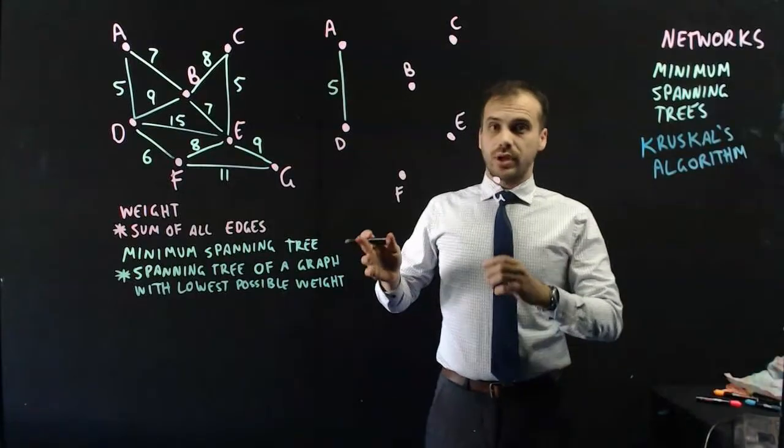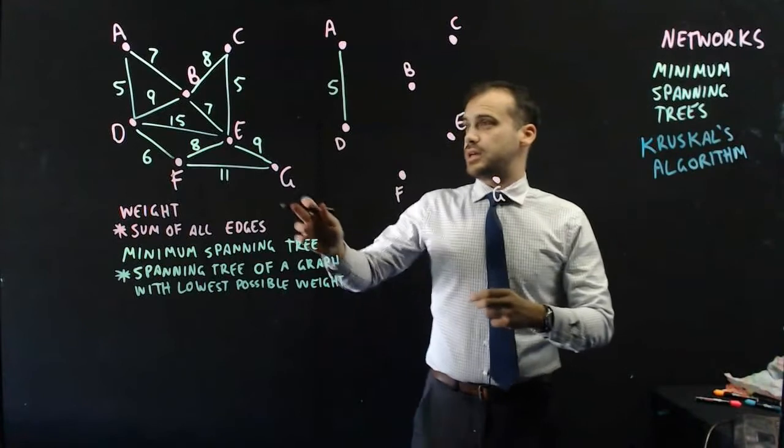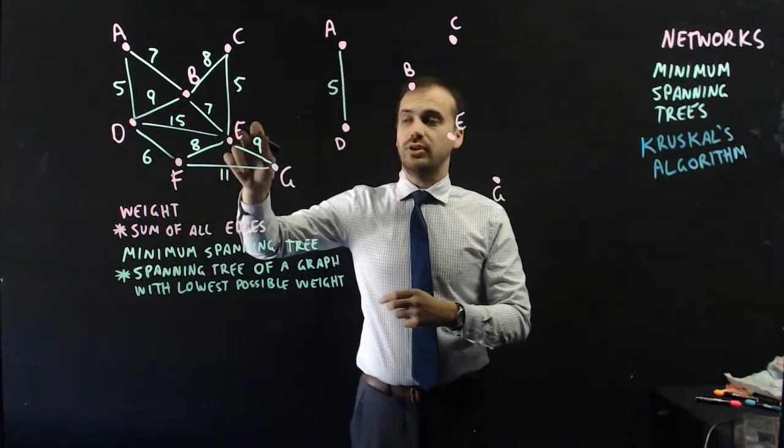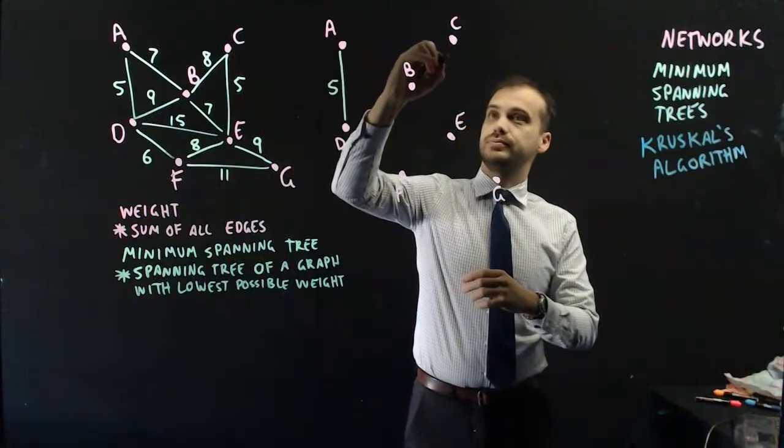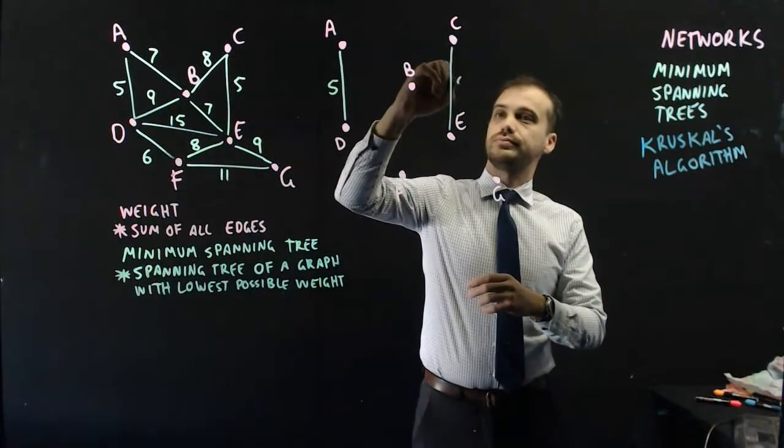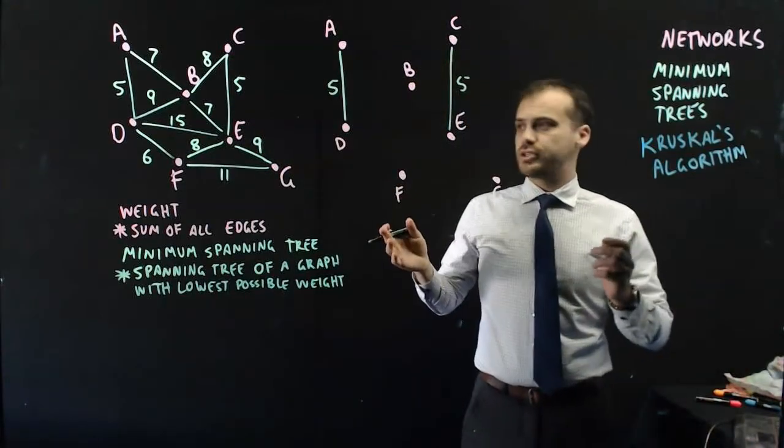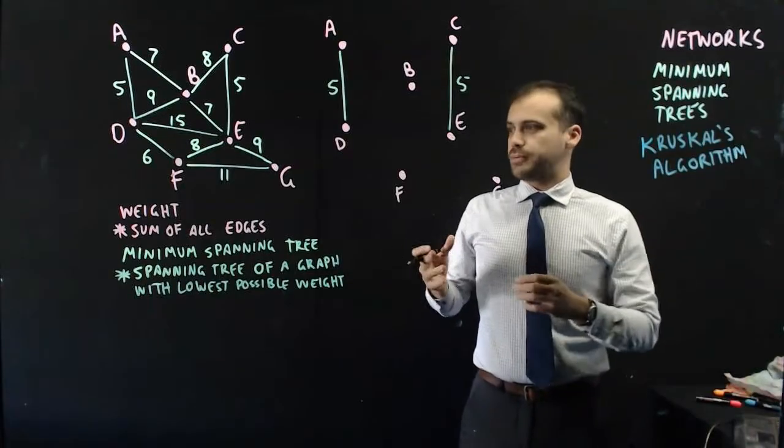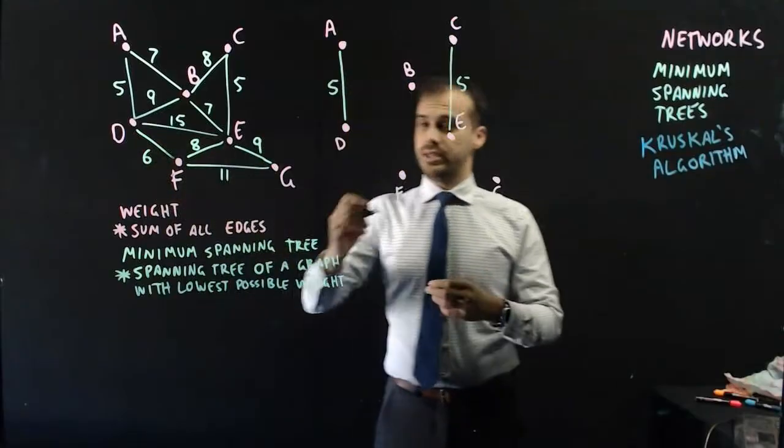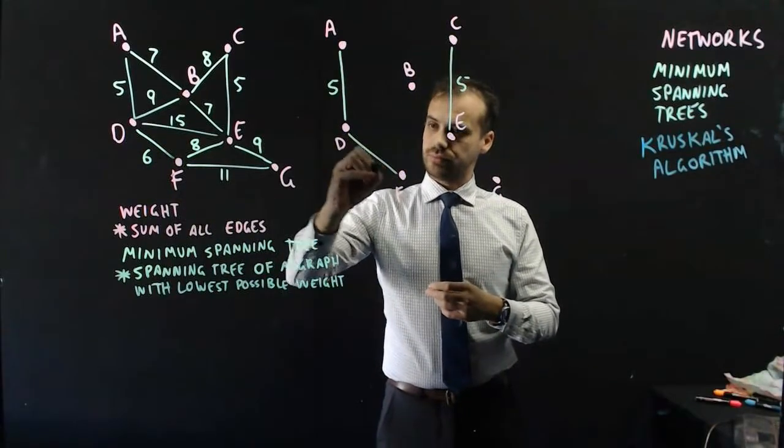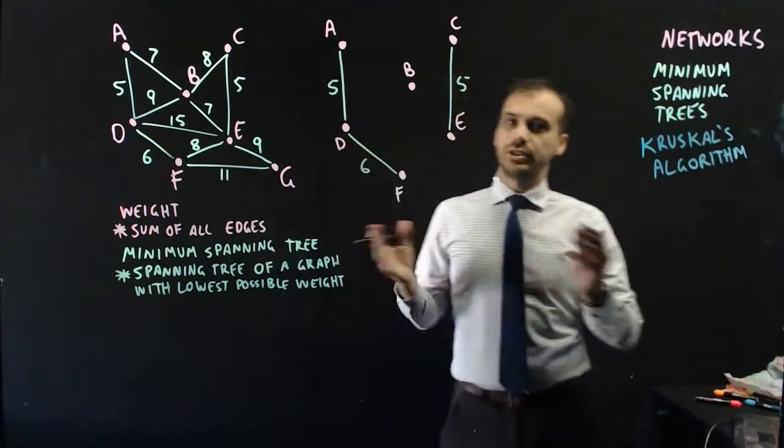Next up, I repeat that process. I say, right, there's another one here that's 5 long. I'm going to draw that one together, C to E. Okay, that's pretty straightforward. Now, next up, I find the next smallest one. Oh, there's a 6 here. Okay, D to F. This is really easy.